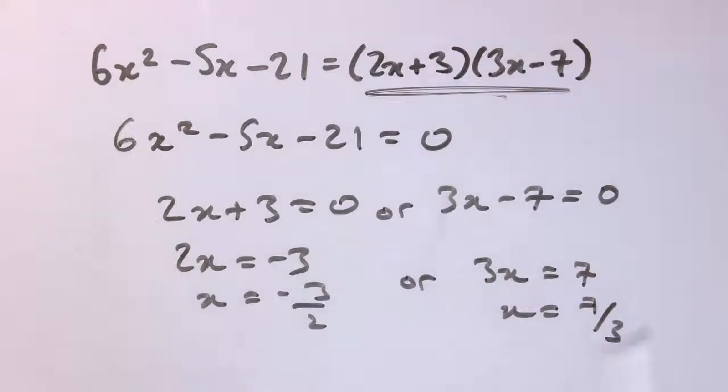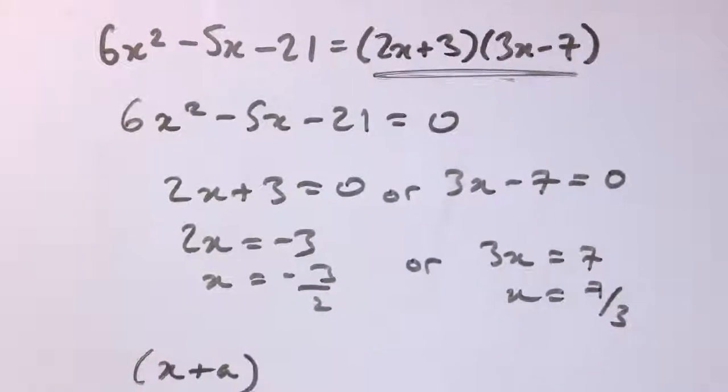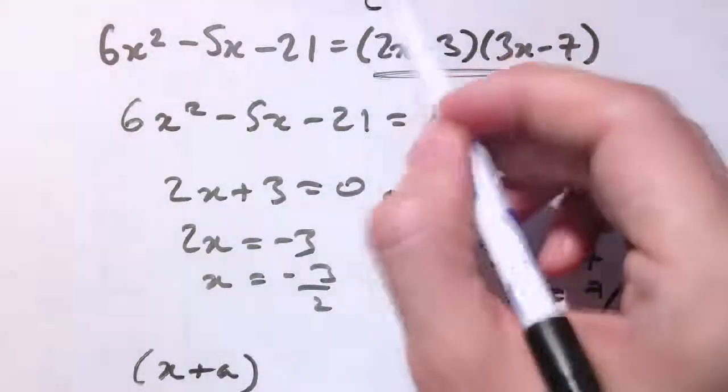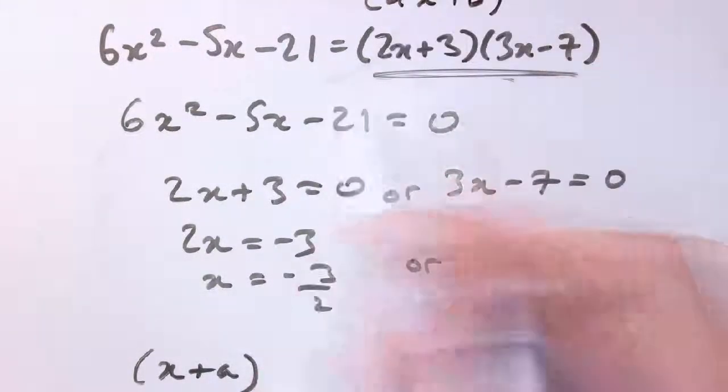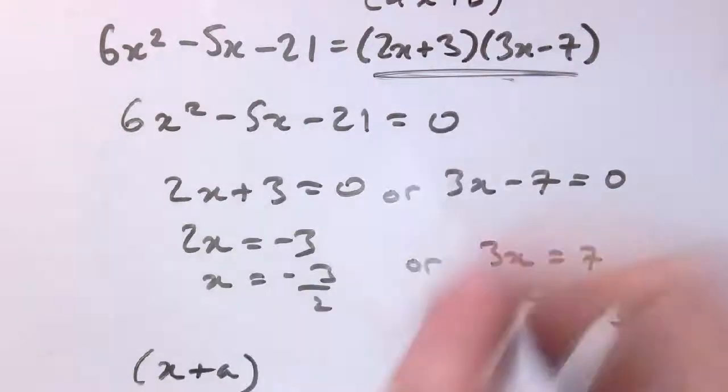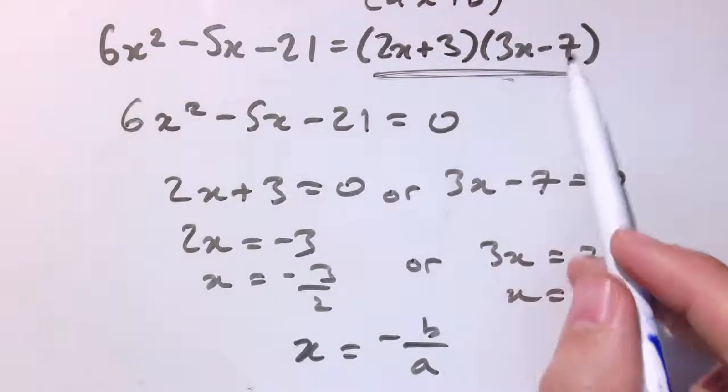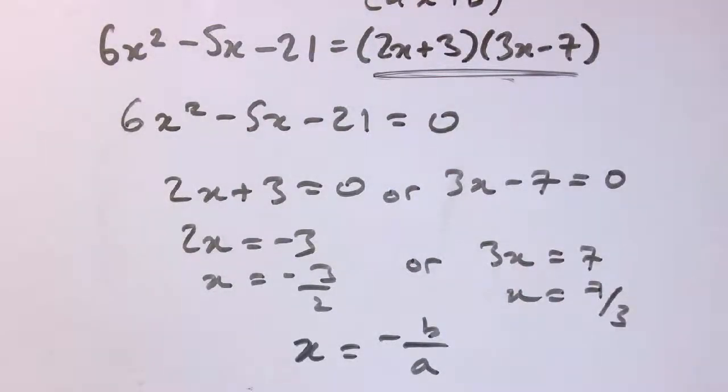With the basic factor theorem, if the factor was x plus a, it was just minus a was a root. Whereas here, if it's of the form ax plus b, then the root is minus b over a. Here we've got minus 3 over 2, that's this root here, and minus minus 7 over 3, that's 7 thirds.